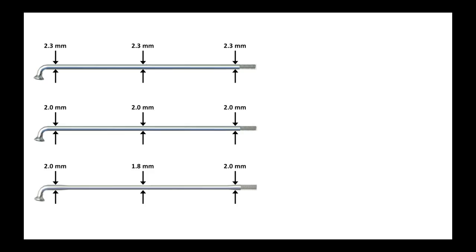We will now compare these three spokes. The top one is a straight gauge 2.3mm spoke. The middle is a straight gauge 2mm spoke. And the third one is a double butted spoke, 2mm at the ends and 1.8mm in the middle.